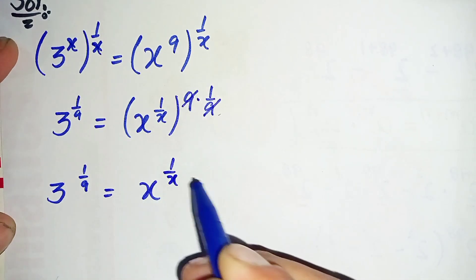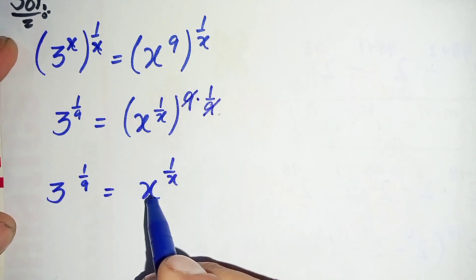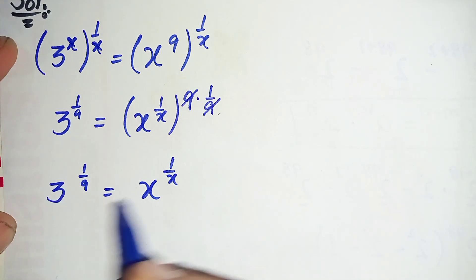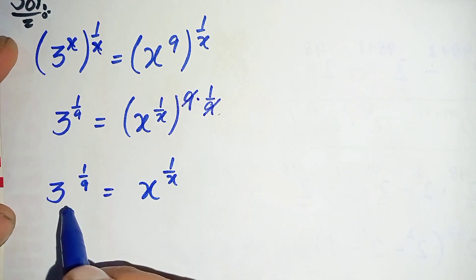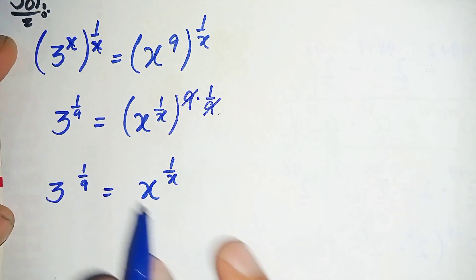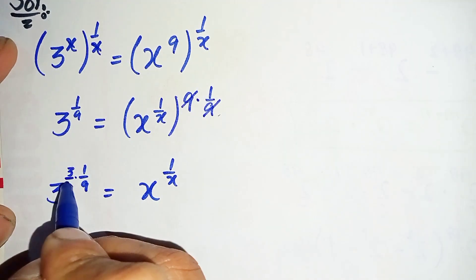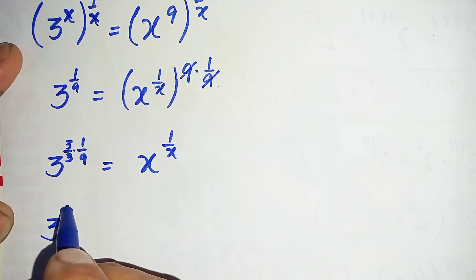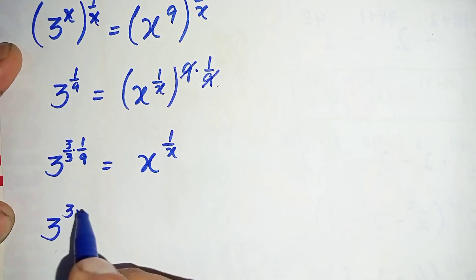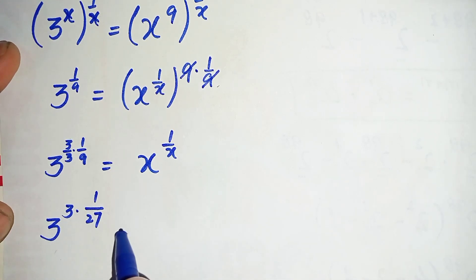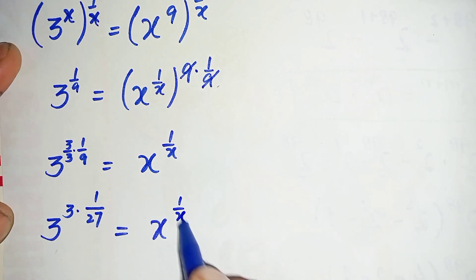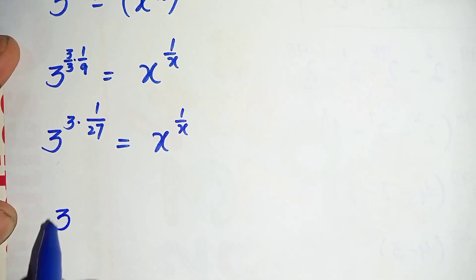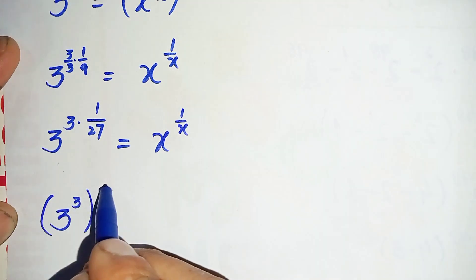On the right hand side there is x in the base and x in the denominator of the power, so I will try to make the left hand side look like this as well — making the base and the number in the power the same. For that we will multiply and divide by 3 in the power, so the left hand side can be written as 3 raised to power 3, all raised to power 1 over 27.